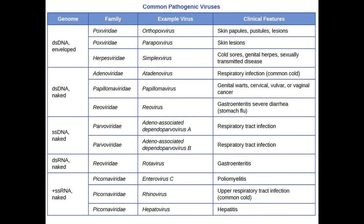This table shows common pathogenic viruses categorised according to their genome and whether they are surrounded by an envelope. The double-stranded DNA viruses include pox viruses, herpes viruses, and adenoviruses; with these, mRNA is transcribed directly from the DNA template. Single-stranded DNA viruses include the parvoviruses; with these, the DNA is first converted to double-stranded DNA before mRNA is transcribed.